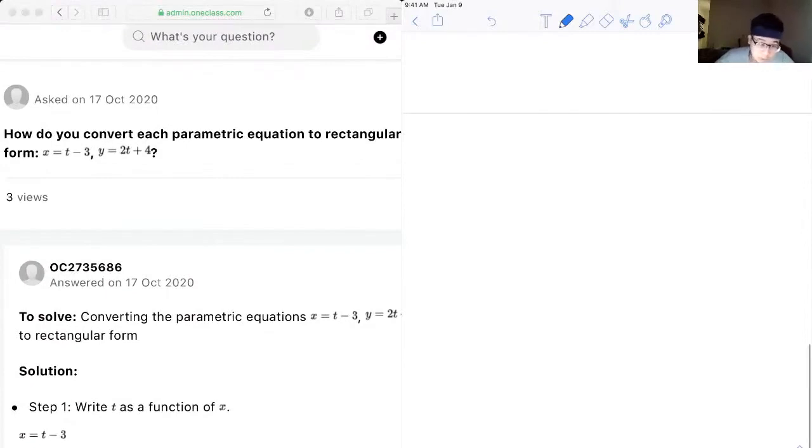Okay, so for the next question we are asked to convert parametric equations which is x equals t minus 3, y equals 2t plus 4, to rectangular form.